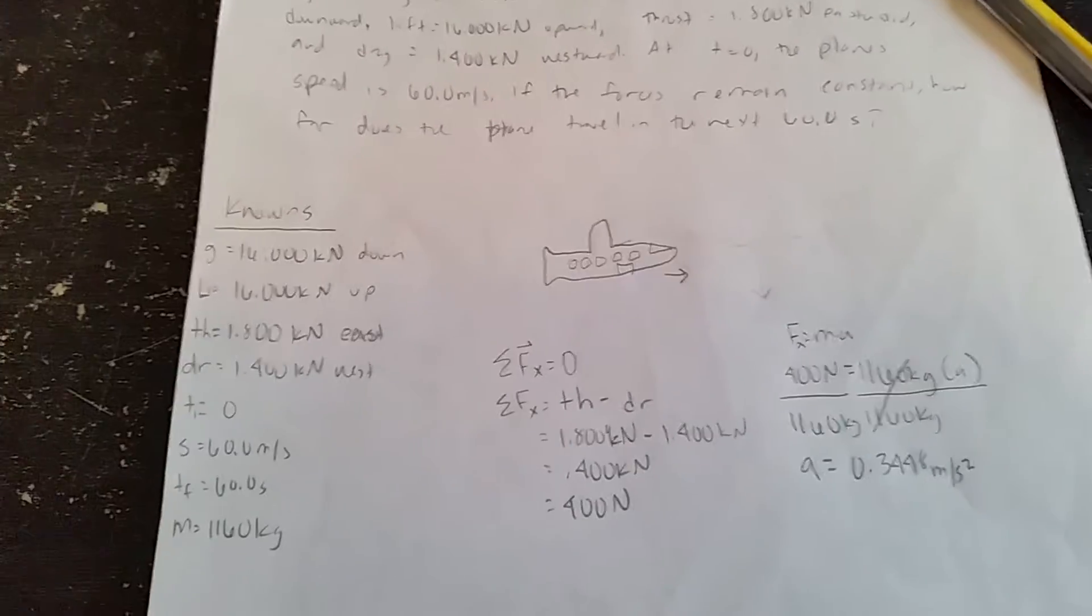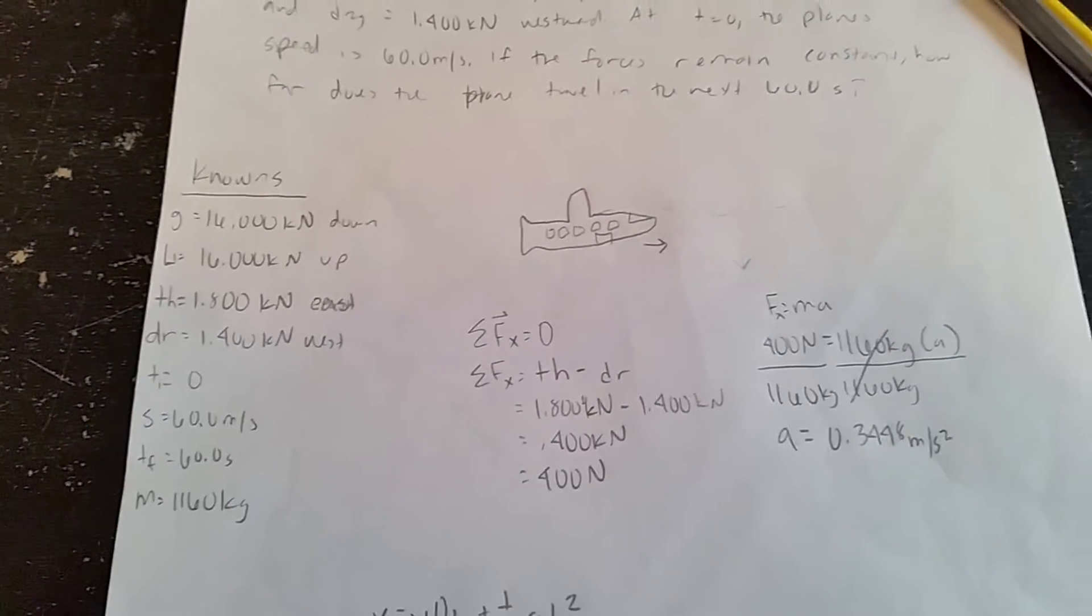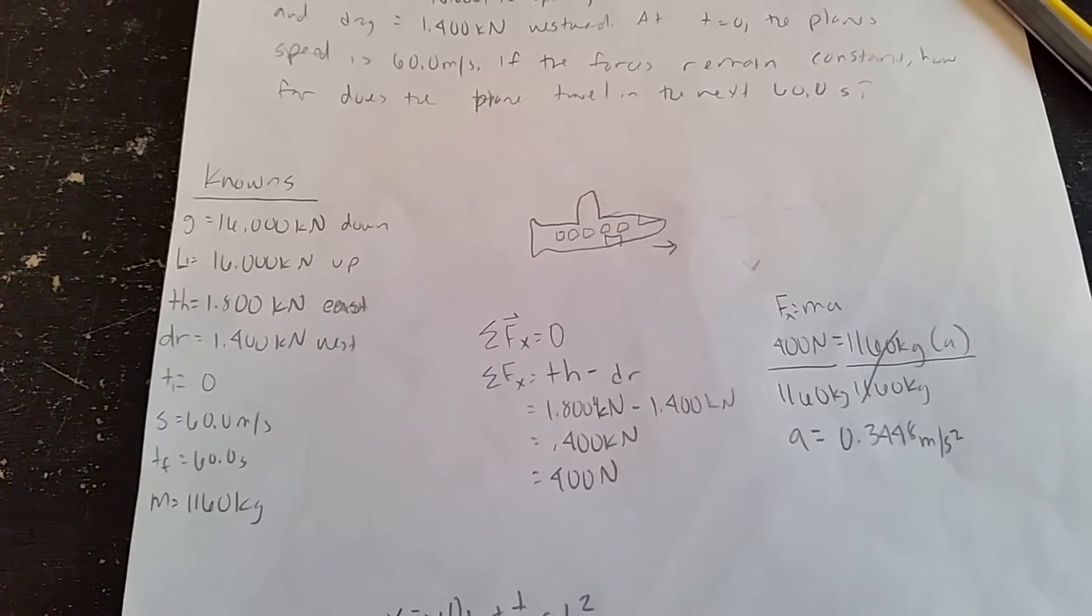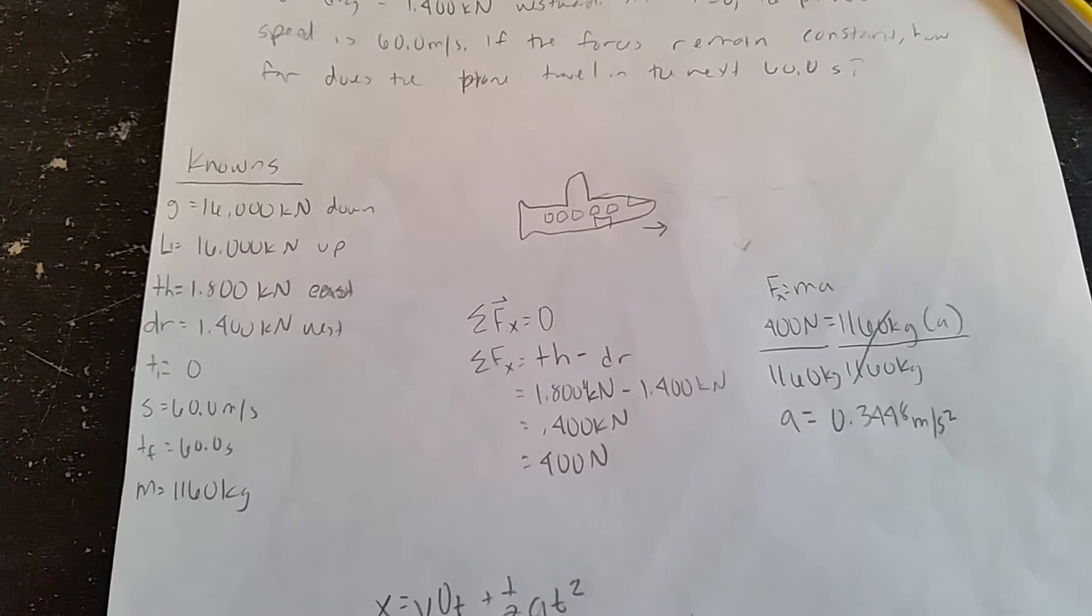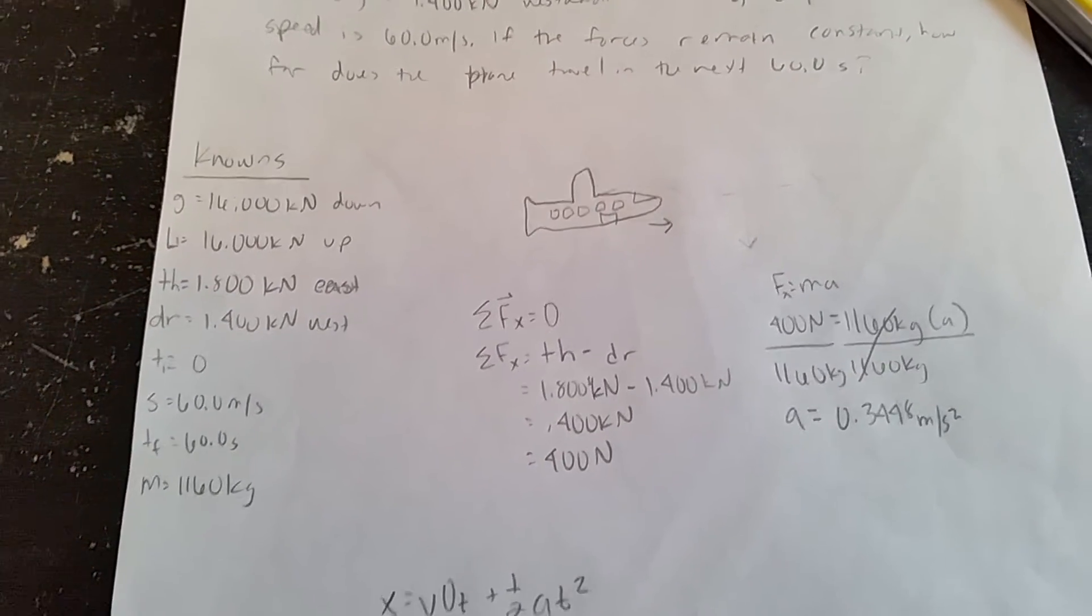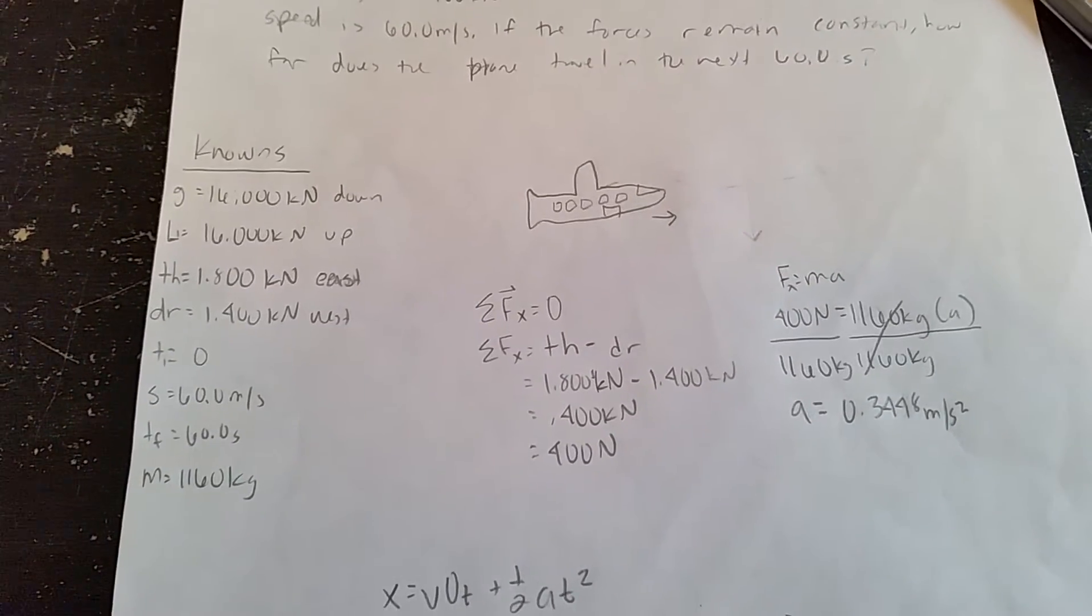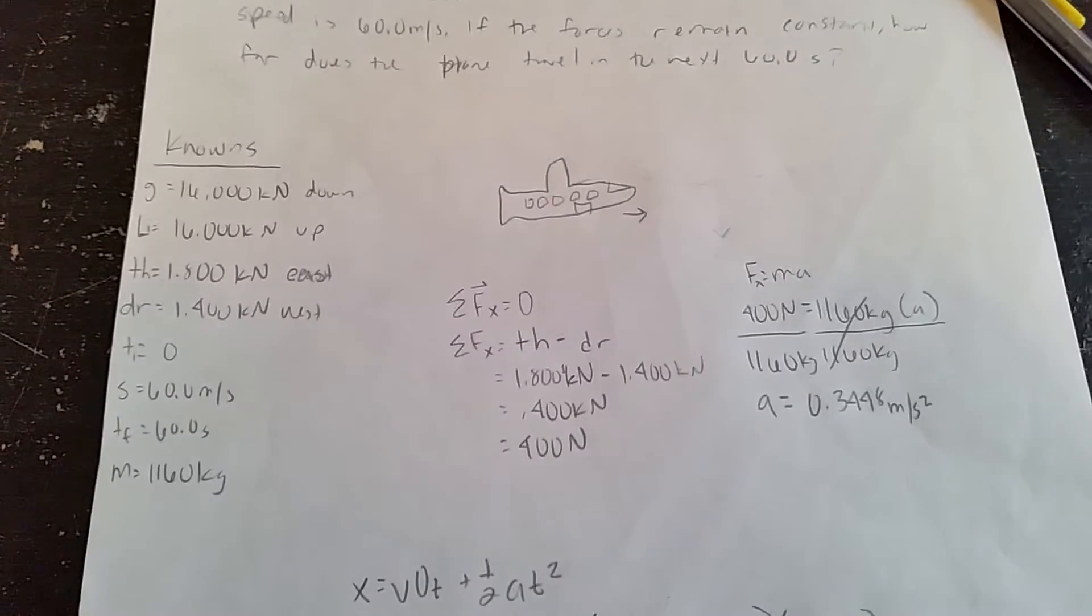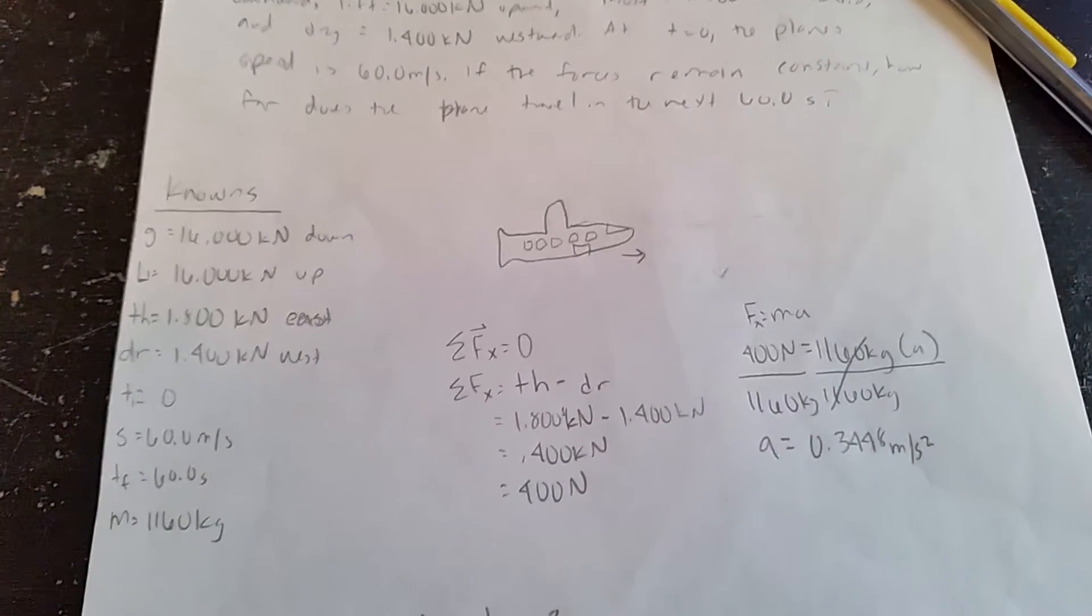So the first thing I do here is I find the forces in the x direction. So that would be thrust minus drag, which is 1.800 kilonewtons minus 1.40 kilonewtons, which gives me 0.400 kilonewtons. But what I decided to do is I decided to convert it to make it 400 newtons.